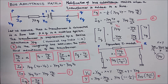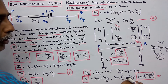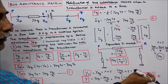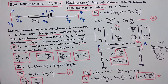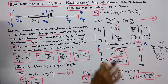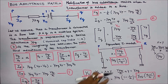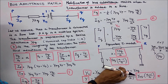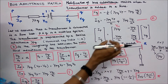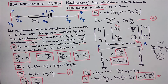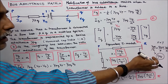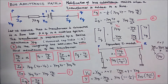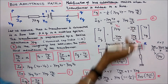So the shunt charging admittance on the P side is YPQ multiplied by (A minus 1) divided by A. The series admittance in the middle is YPQ divided by A. Adding X plus Y gives YPQ divided by A. Next, I have to find Y22.